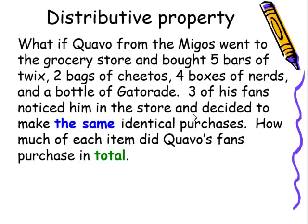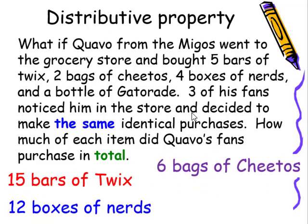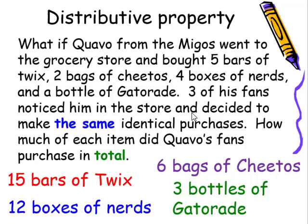What if Quavo from the Migos went to the grocery store and bought five bars of Twix, two bags of Cheetos, four boxes of Nerds, and a bottle of Gatorade, and three of his fans noticed him in the store and decided to make the same identical purchases? How much of each item did Quavo's fans purchase in total? If you stated 15 bars of Twix, six bags of Cheetos, 12 boxes of Nerds, and three bottles of Gatorade, you are correct.